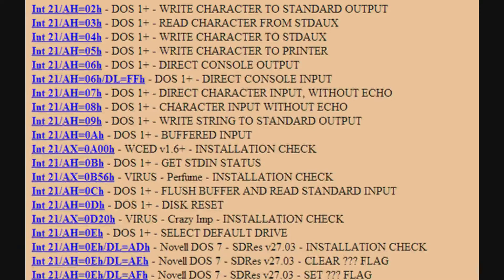This function allows us to print the Hello World message. The requirements to use it are: set the higher 8 bits of the accumulator register (AH) to 09h, and set the DX register to point to the Hello World message followed by a dollar sign. That dollar sign tells DOS to stop printing once it's reached.